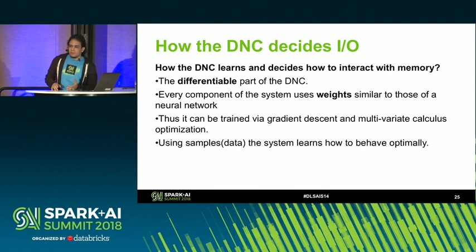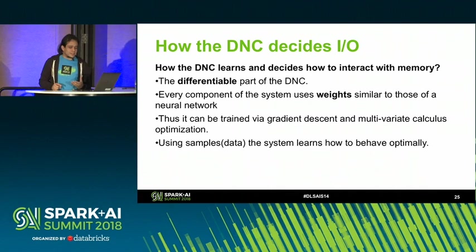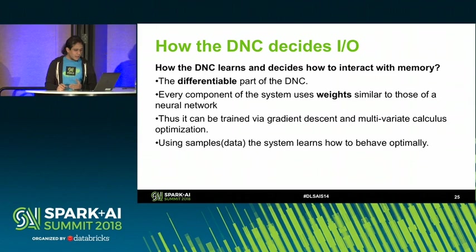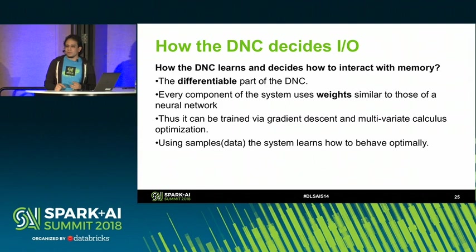The DNC decides — but how? Every component of the system uses weights, similar to a common neural network. There are read weights, write weights, content lookup weights, temporal lookup weights — everything has weights. So if you have weights, you can use gradient descent and backpropagation to train it. That's how the DNC decides, and that's why 'differential' is in its name. Basically, we use training data like we do in machine learning problems, and the system learns to interact with the memory using this training data.